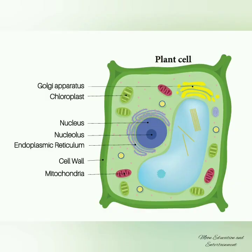Plant Cells: Plant cells are usually larger in size and hard in nature. The plant cell has a cell wall in addition to the cell membrane. It has chloroplasts which contain chlorophyll for food production. Plant cells have larger vacuoles, but centrioles are absent in the plant cell.